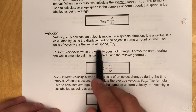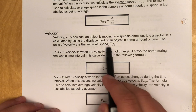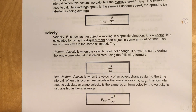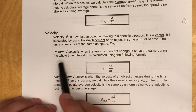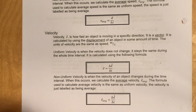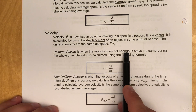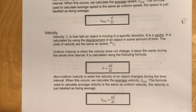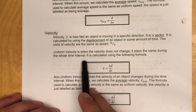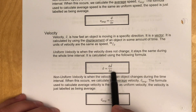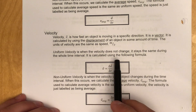Just like speed, the units for velocity are meters per second. Uniform velocity, similar to uniform speed, is where the velocity does not change — it stays the same during the whole time interval, and it's calculated using a similar formula.